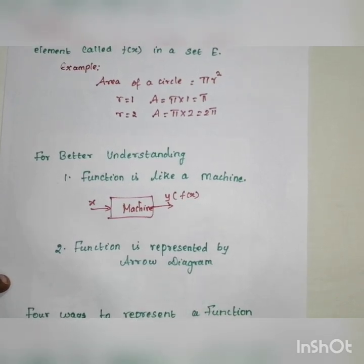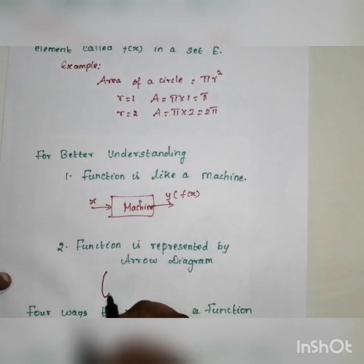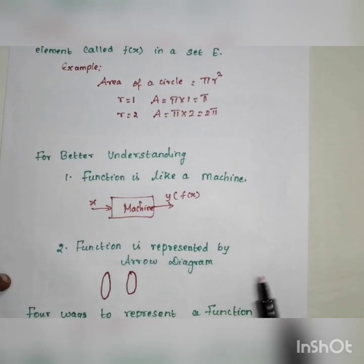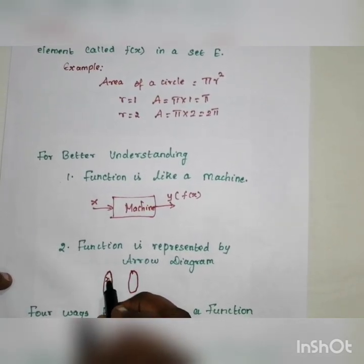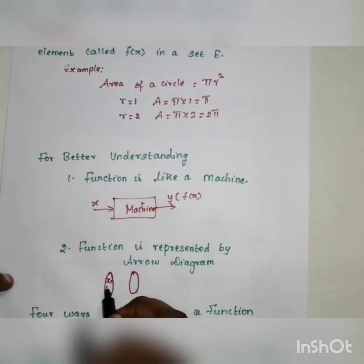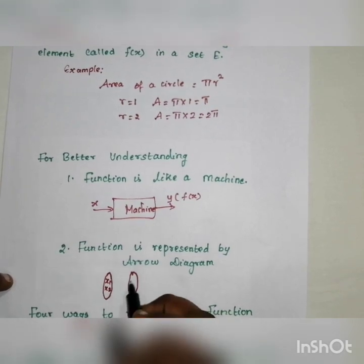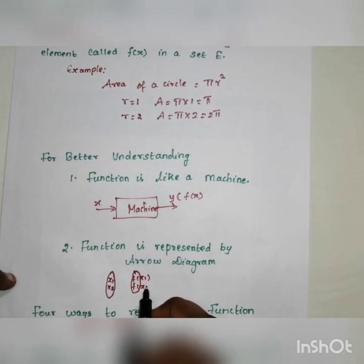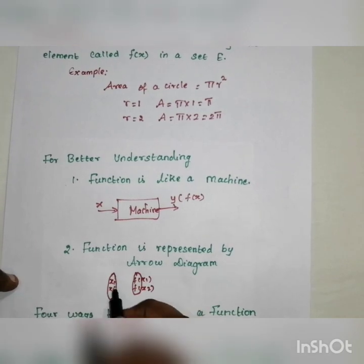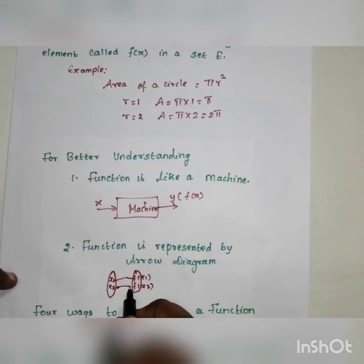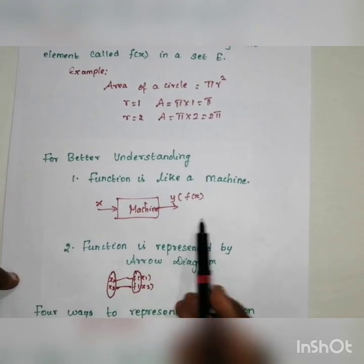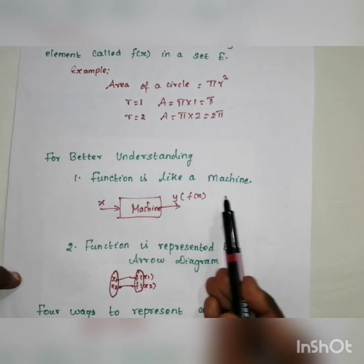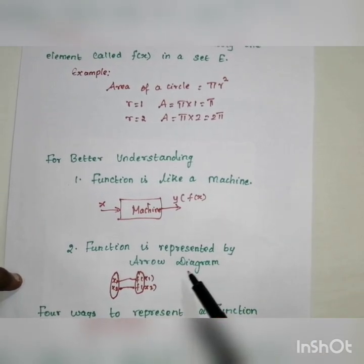We can represent a function using an arrow diagram. In the arrow diagram, we have set D with elements x1, x2, and set E with corresponding elements f(x1) and f(x2). This is a mapping between the two sets.